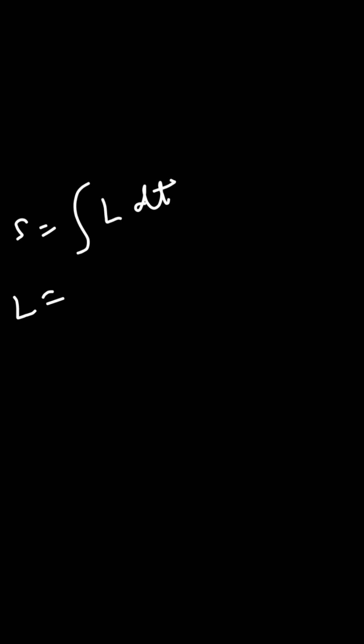L equals kinetic energy minus potential energy. Here, kinetic energy equals half mv squared, where v is the velocity, whereas potential energy equals 0 as the body is on the surface.